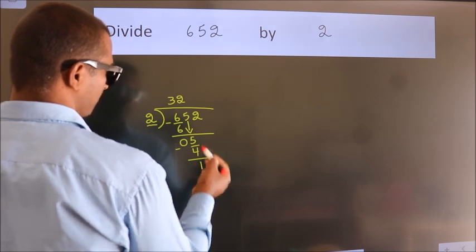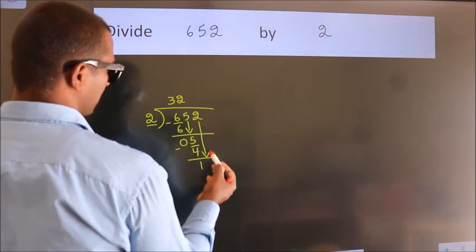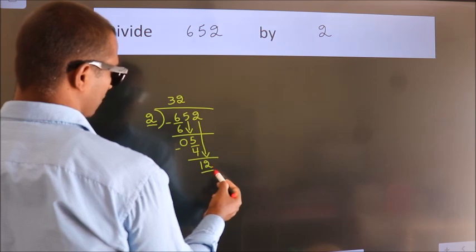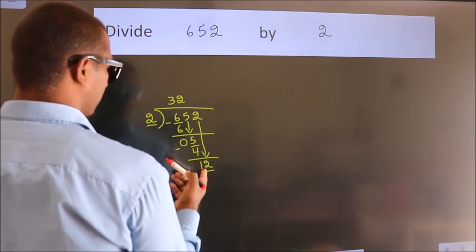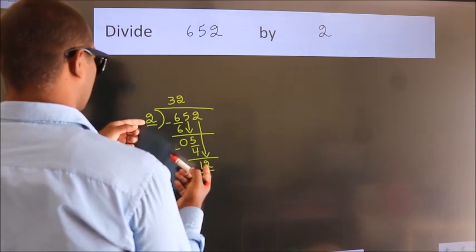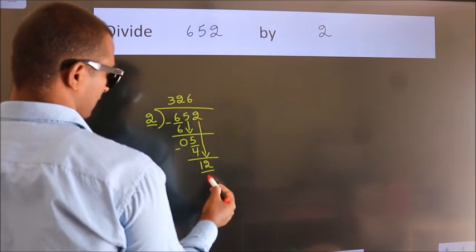After this, bring down the beside number. So, 2 down, making 12. When do we get 12? In the 2 table, 2 sixes are 12.